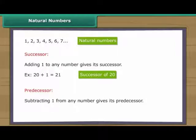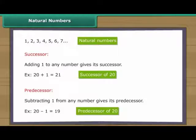Subtracting 1 from any number gives its predecessor. For example, subtracting 1 from 20 gives 19, which is the predecessor of 20.